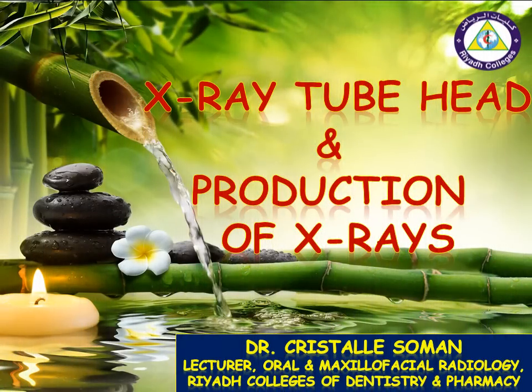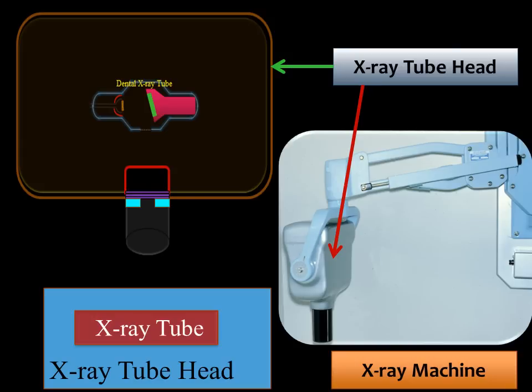X-ray tube head and production of x-rays. The x-ray machine has three main components: the x-ray tube head, the extension arm, and the control panel. The dental x-ray tube where the x-rays are produced is located inside this x-ray tube head.